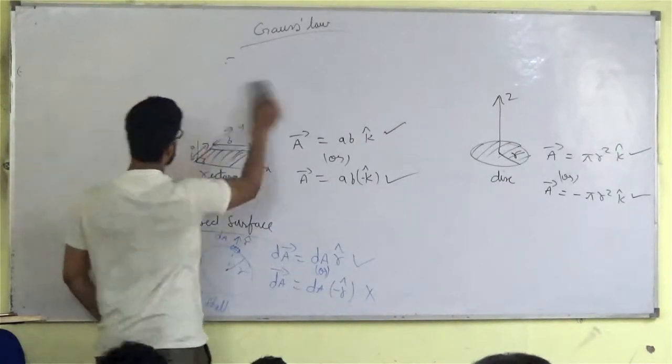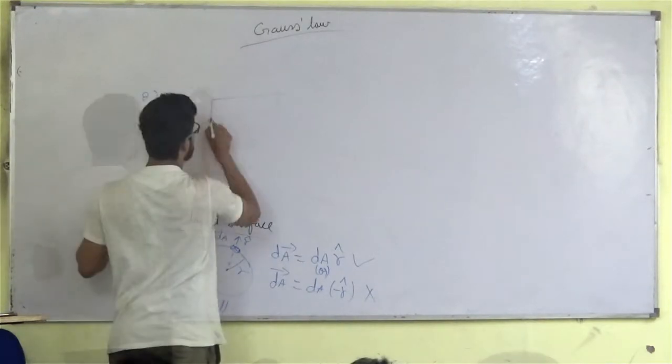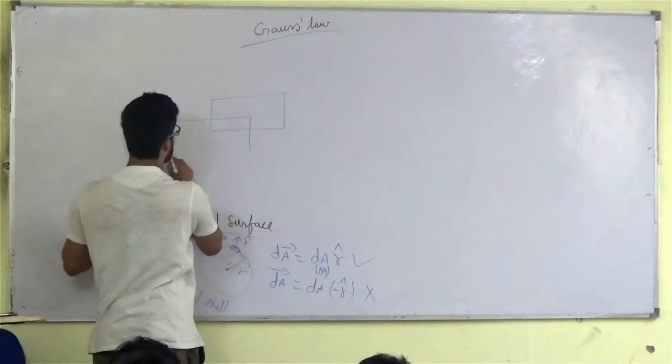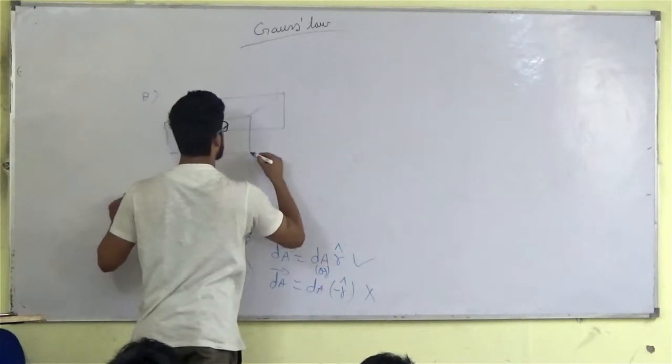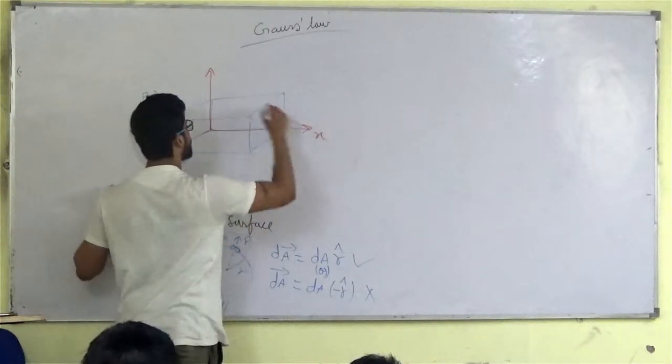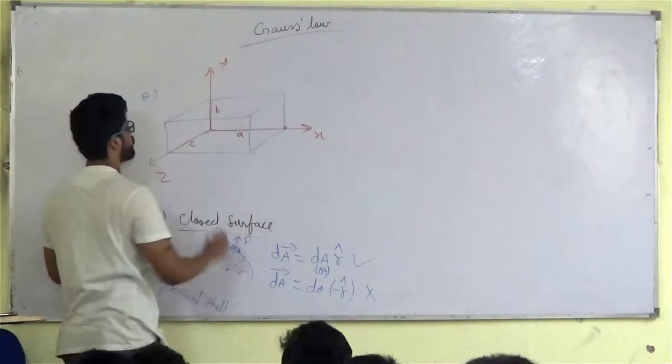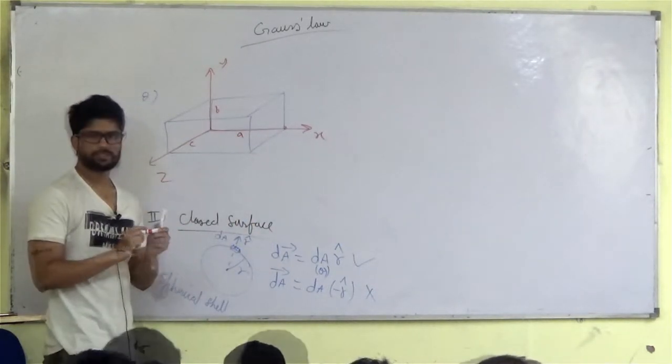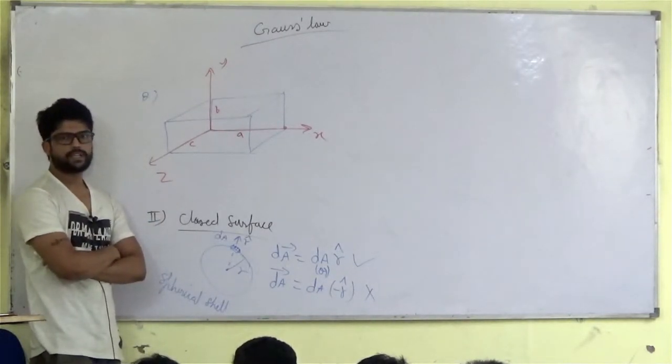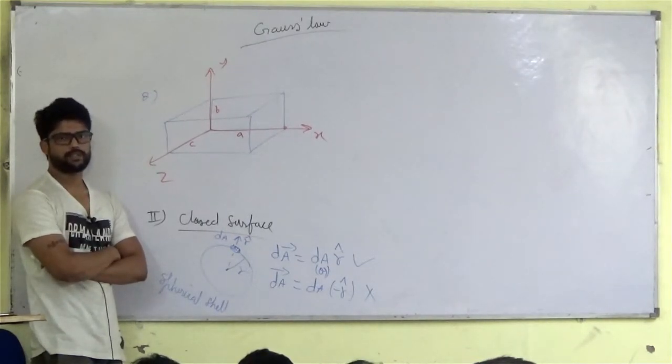Let's take a question. Question: Write the area vector for all the six faces of the given cuboid. Write the area vector for all the six faces of the given cuboid. Let's give it a name. It's three lengths: length, breadth and height. A, B, C.